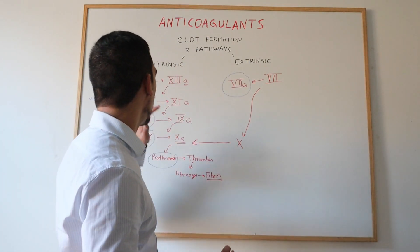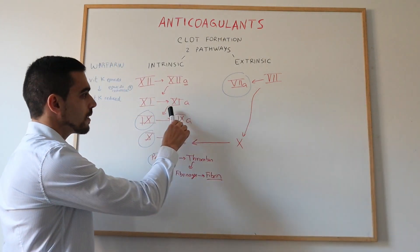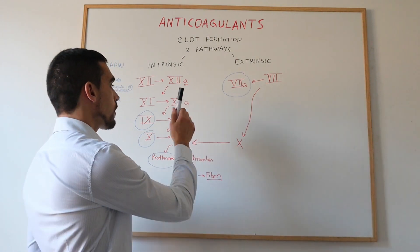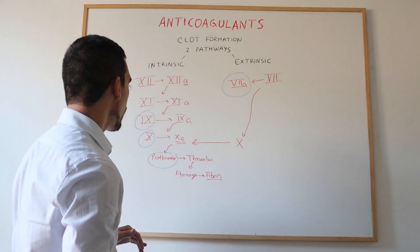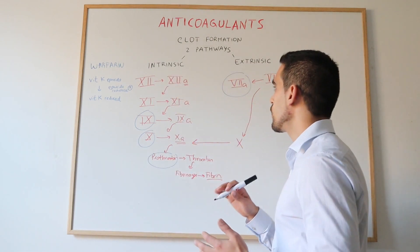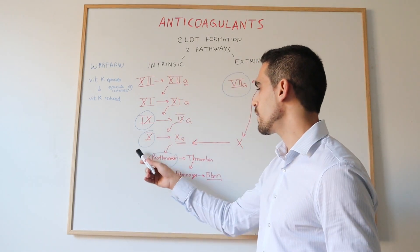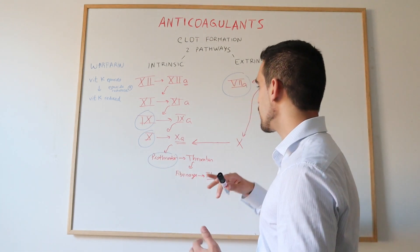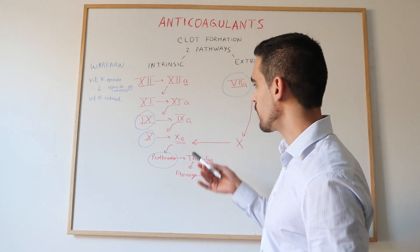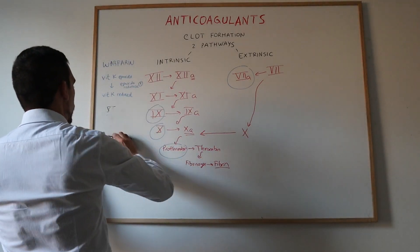However, there is a delay in the onset of the anticoagulant effect of warfarin, because it has no effect on clotting factors that are already carboxylated. It prevents activation of Factors 7, 9, 10, and 2, but it doesn't affect the ones already activated and present in the bloodstream.